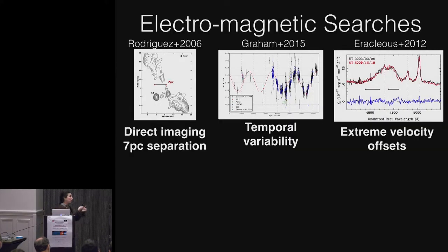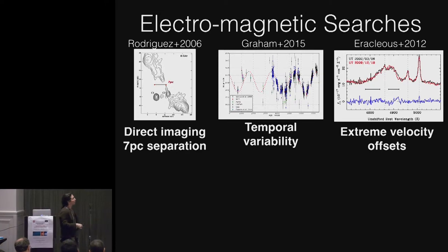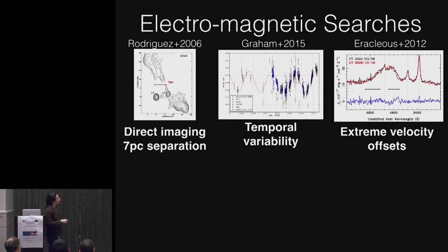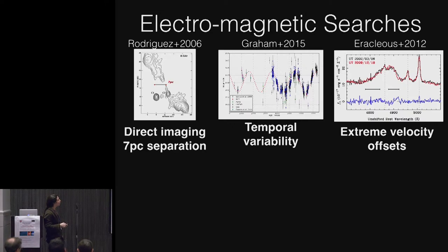But the question is, do they seal the deal such that we can see gravitational radiation? So there are a few observational tricks that I thought I'd talk about quickly.